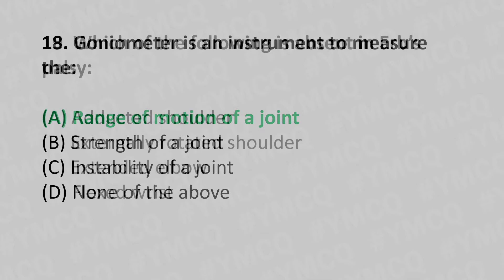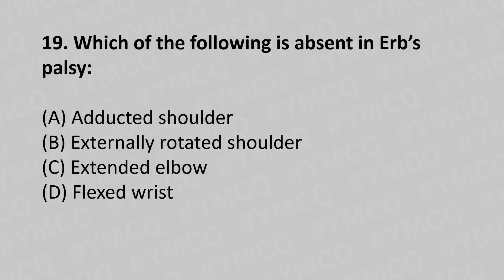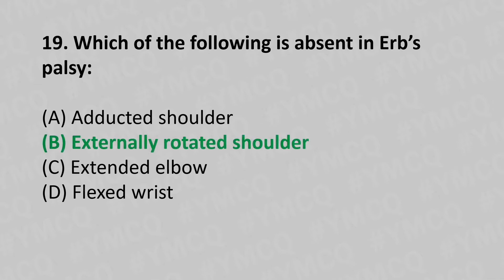Moving to our nineteenth question. Which of the following is absent in Erb's palsy? Option A, adducted shoulder. Option B, externally rotated shoulder. Option C, extended elbow. Option D, flexed wrist. And the answer is Option B, externally rotated shoulder.